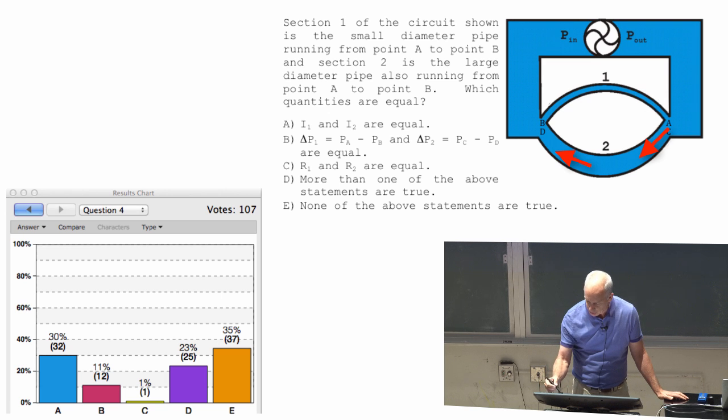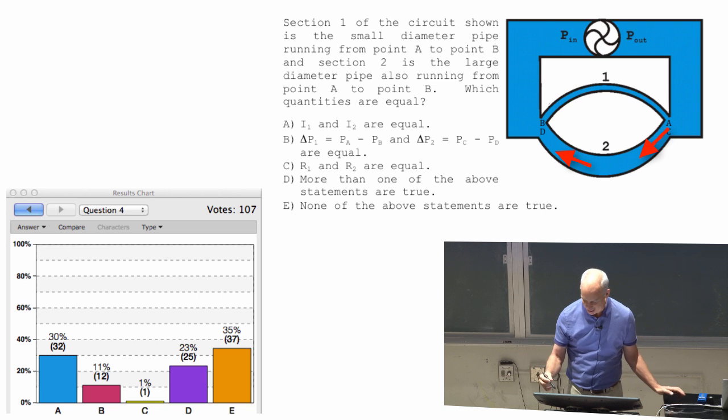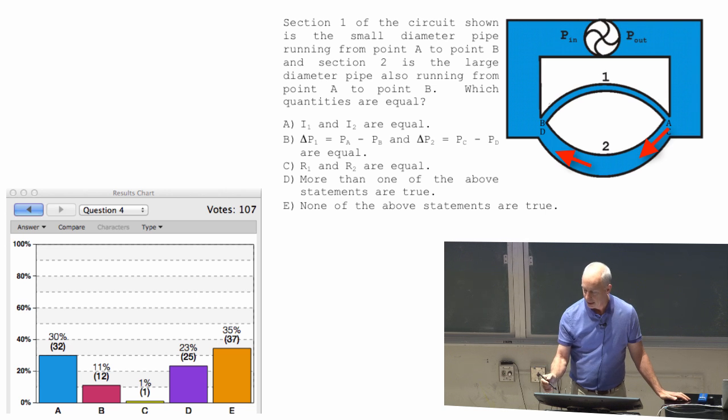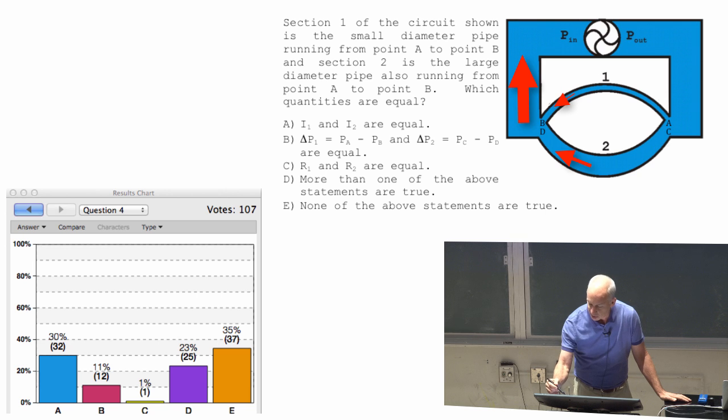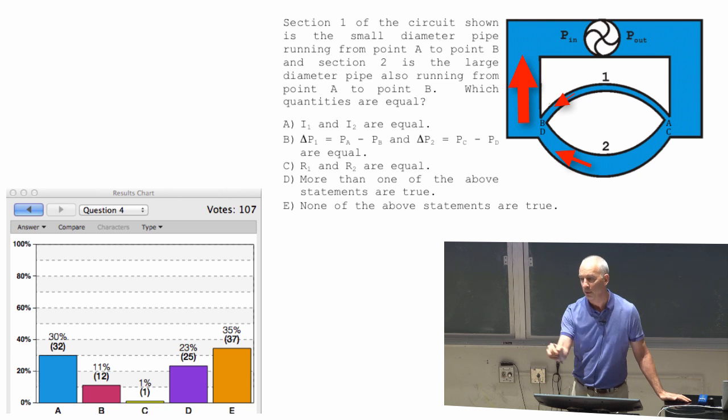Different sections of number two have the same current, but they don't have the same current as each other. I1 doesn't have to be equal to I2, but I1 plus I2 does have to be equal to the total current that's going around this whole thing.